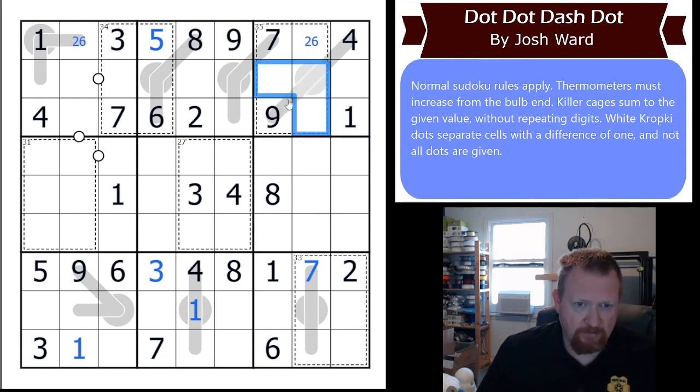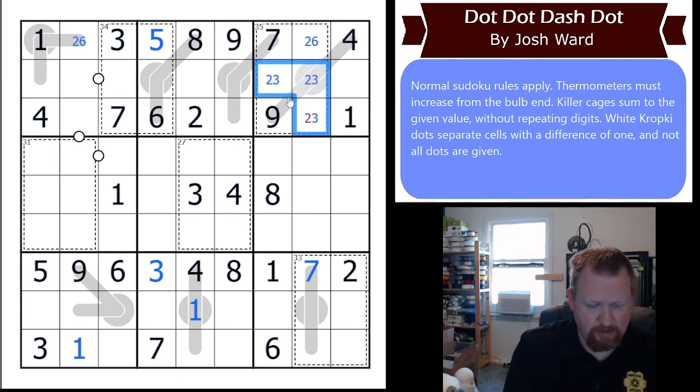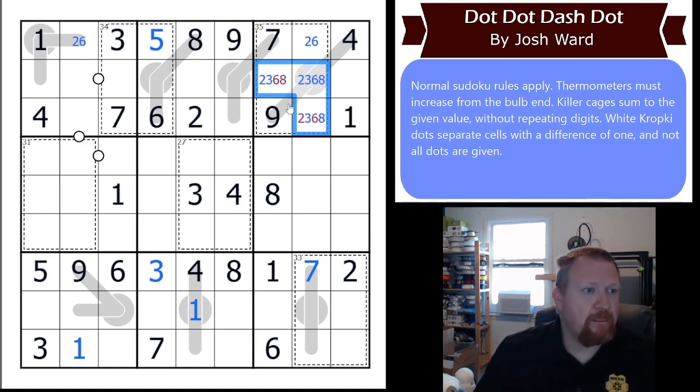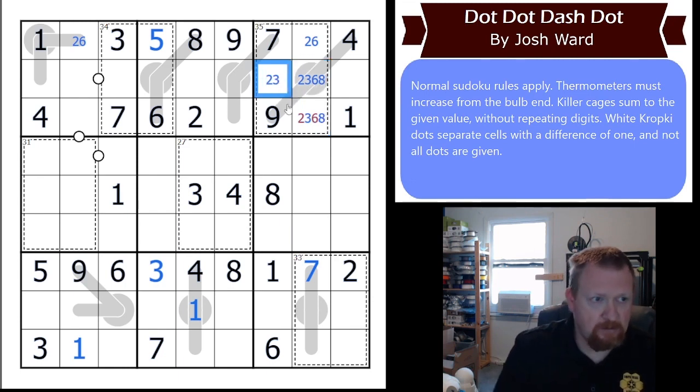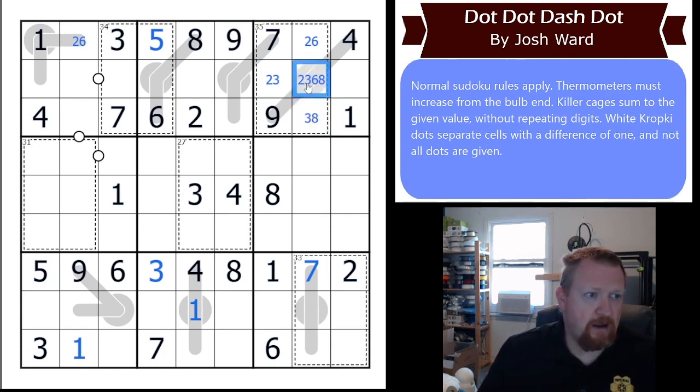We have a 2, 6 there. So, the rest are 2, 3, 6, and 8. We can take the 6, 8 out of this one, and we can take the 2, 6 out of this one. This one obviously needs to be less than 4, so that is either a 2 or 3. We'll remove those.